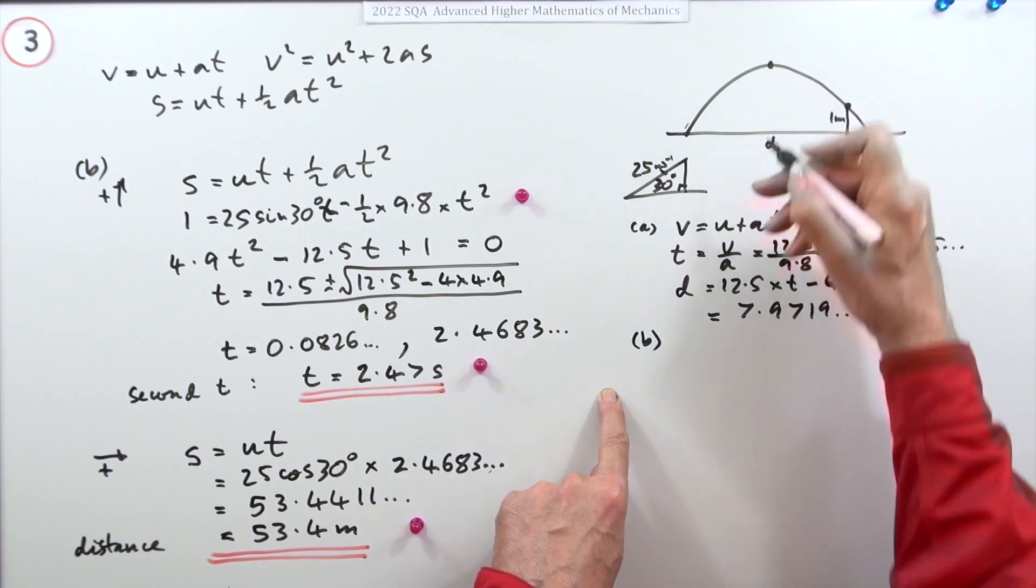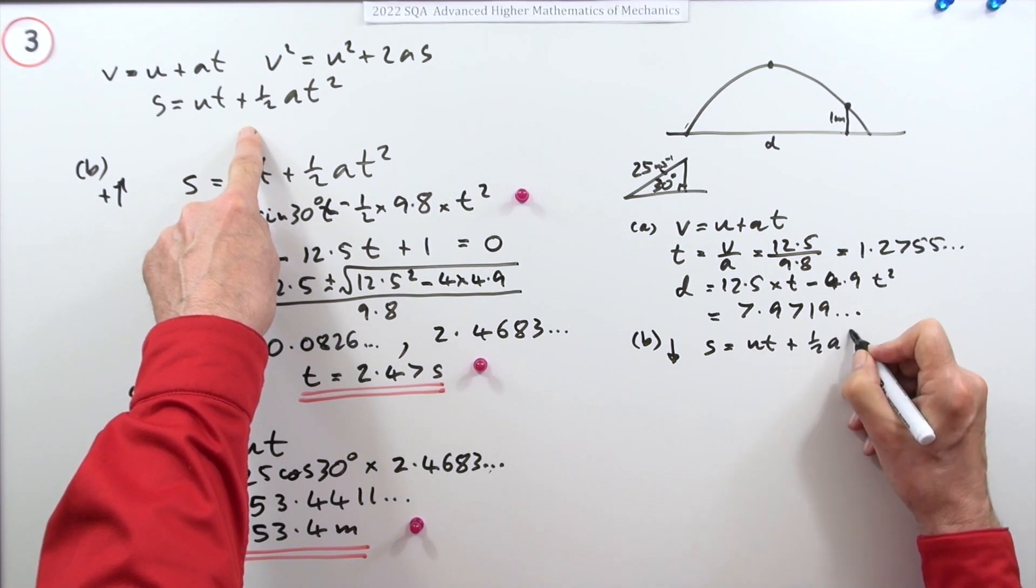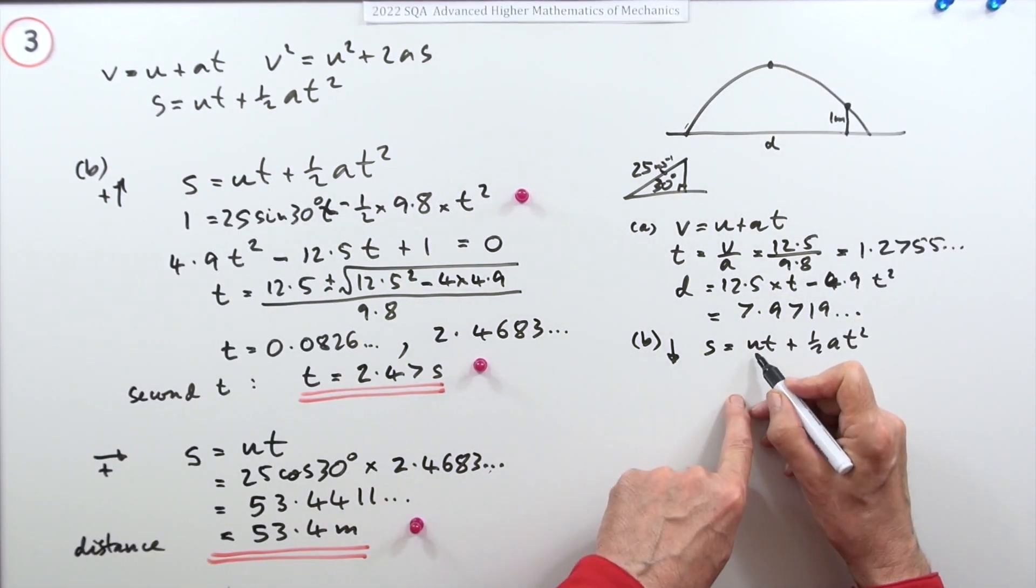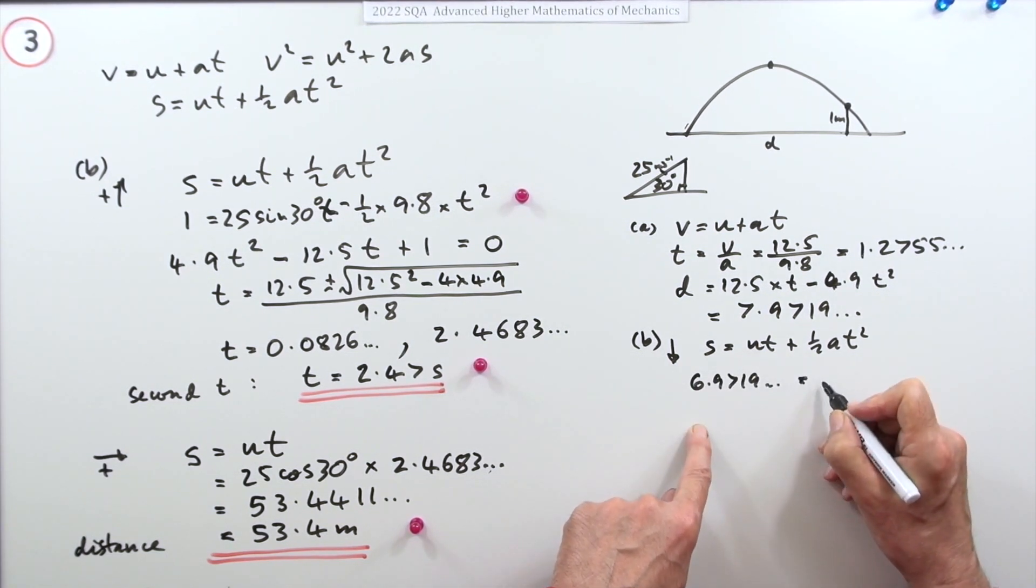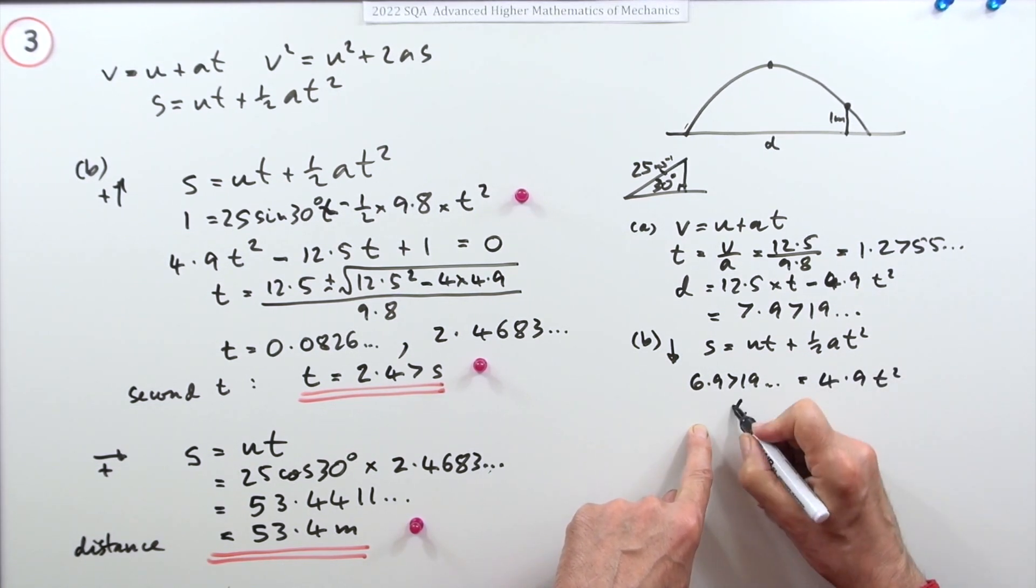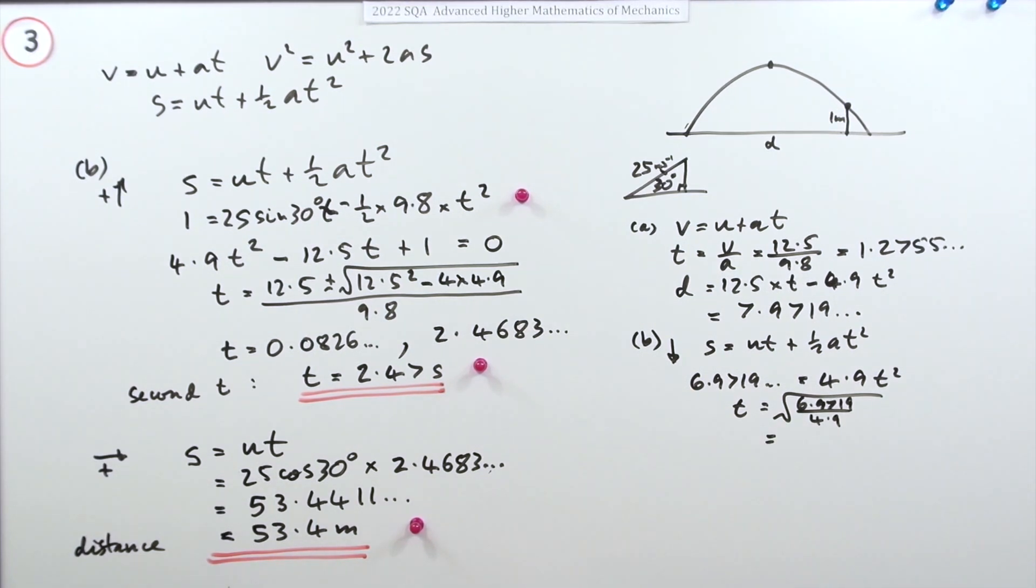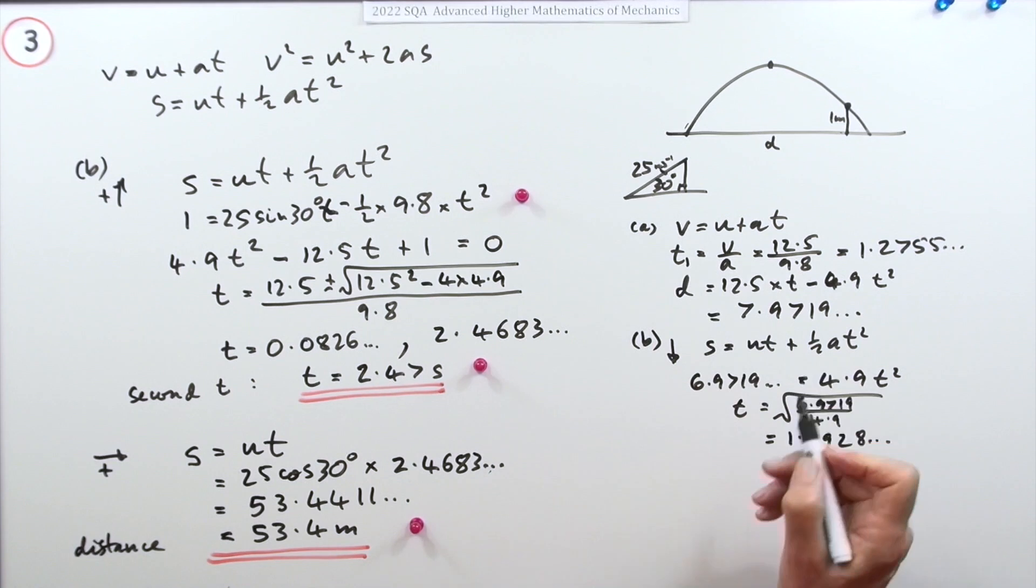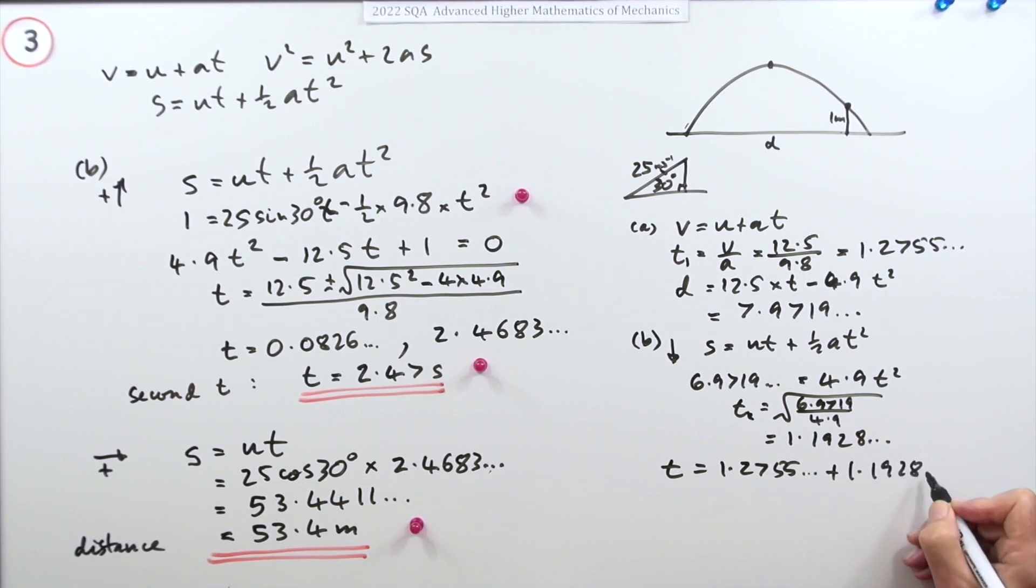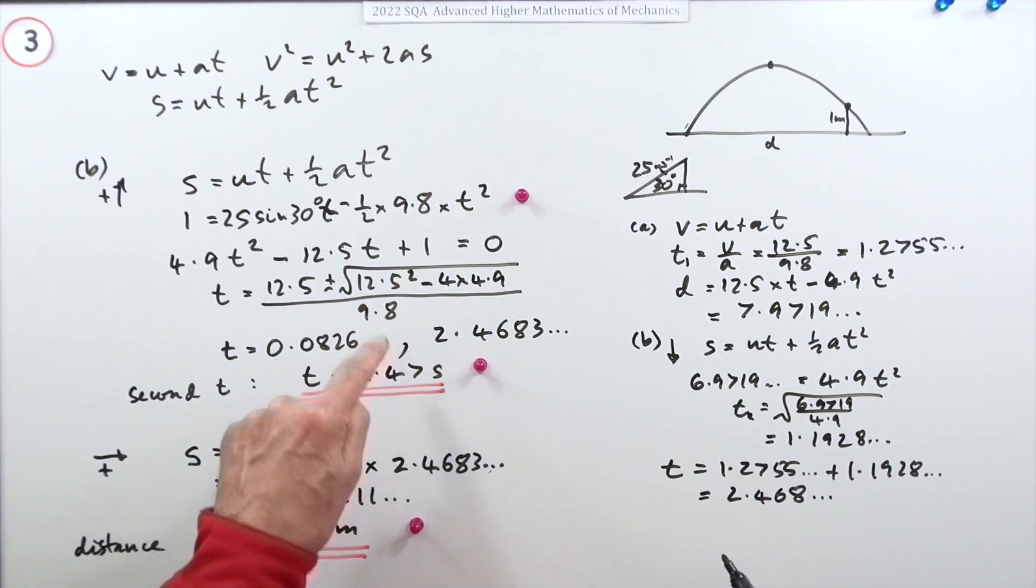In part b you could take dropping it down from the top, use this to find the time. Starting at the top and going down that would be zero, and the distance you would drop would be one less than that. So you'd have 6.9719 equals 4.9t squared. So t is just the square root of that. Typing that in gives you 1.1928 and so on. That would be t1 and that would be t2, so the total time would be the sum: 1.2755 plus 1.1928, which is 2.468 and so on, the same answer.